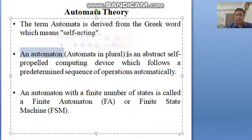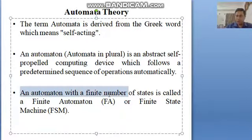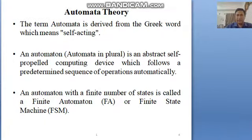Automaton is an abstract self-propelled computing device which follows a predetermined sequence of operations automatically. This means that we can develop a system that can transform the energy and use the material and transmit the material without the direct participation of man. This is a system that we can create. And this system that we can create, a theory that we call automaton. An automaton with a finite number of states is called a finite automaton and a finite state machine.